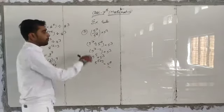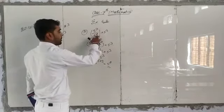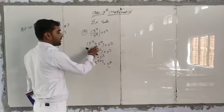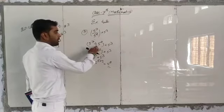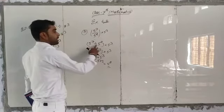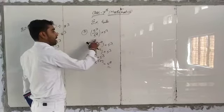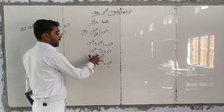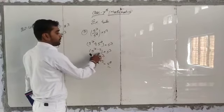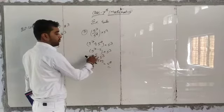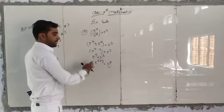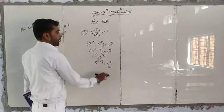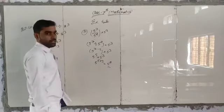So we have 5 to power 7 upon 5 to power 2. If we divide it, we subtract the powers, giving minus 2 from 5. So we multiply: 5 to power 8 is our answer.